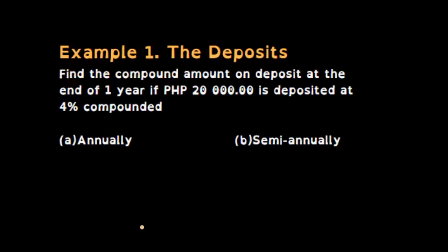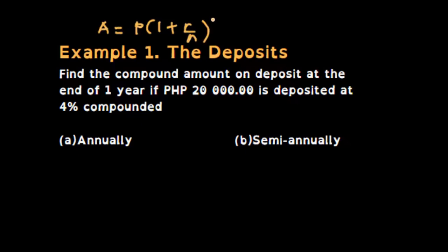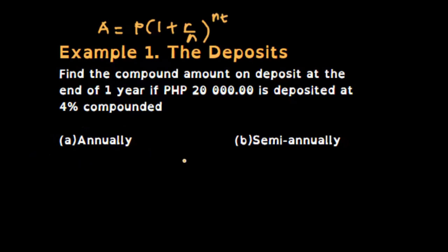Let us try the first example. Find the compound amount on deposit at the end of one year if 20,000 pesos is deposited at 4% compounded annually or semi-annually. Using the formula A equals P times 1 plus R over N raised to NT, for the annually case, N is 1.